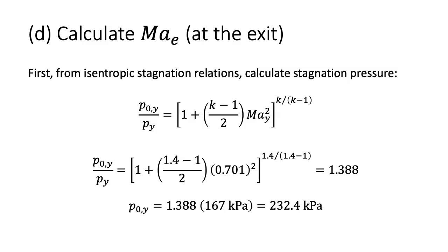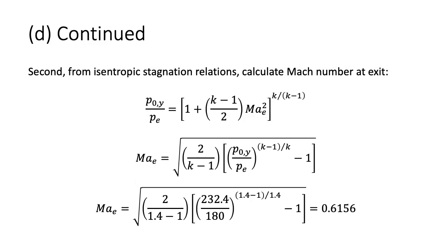For Part D, we calculate the Mach number at the exit. Now that we are past the shock, the flow is isentropic. We first use the isentropic stagnation relation to calculate the stagnation pressure after the shock from the Mach number and pressure after the shock — noting this pressure is used only as a reference value. Second, we use the same relation to calculate the Mach number at the exit from the known exit pressure and the reference stagnation pressure after the shock. The resulting Mach number is 0.6156, which is subsonic as expected for flow after a normal shock.